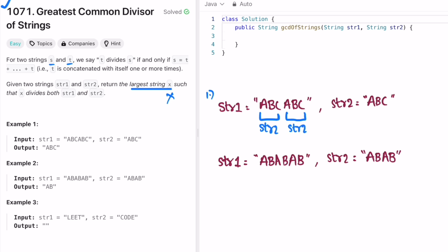So this part is str2 and this part is again str2 and we reach the end of the string one and this part is str2 itself. So we can say that ABC is the common divisor of both str1 and str2.